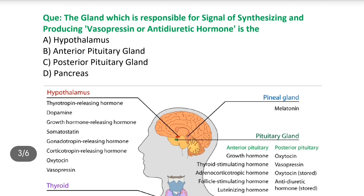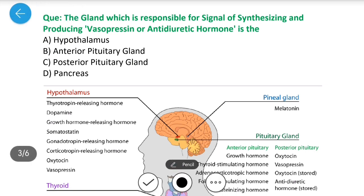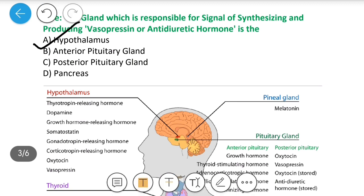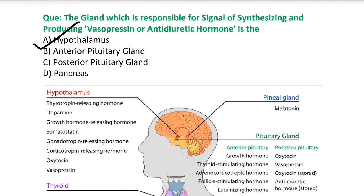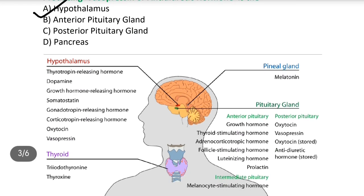Next question: The gland which is responsible for signaling the synthesizing and producing vasopressin or antidiuretic hormone is: A) hypothalamus, B) anterior pituitary gland, C) posterior pituitary gland, D) pancreas. Answer is hypothalamus. Hypothalamus signal देता है hormone secretion के लिए; hormones produce होते हैं और pituitary gland में store होते हैं. Anterior pituitary से growth hormone, thyroid stimulating hormone, ACTH, FSH, LH, prolactin secret होते हैं. Posterior pituitary gland से oxytocin और vasopressin secret होते हैं — vasopressin का दूसरा नाम antidiuretic hormone है.